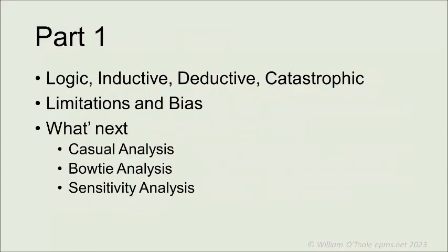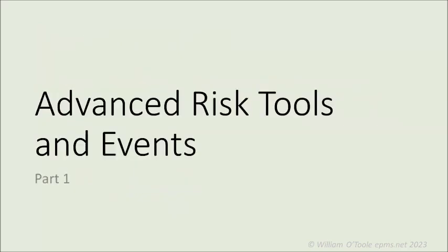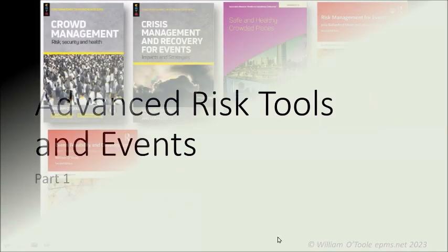So what we've just gone through is the logic — inductive logic, deductive logic — and then the limitations: people think they already know and they absolutely don't. Then the limitations of frequency analysis and bias. In the next part we'll talk about causal analysis, bow-tie analysis, and sensitivity analysis, all with plenty of examples in events so that you can use them. Welcome to email me or go to my website. If you've got any comments, please leave them below. Thank you very much.